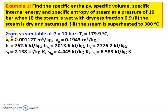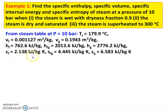We take the first case from the steam table at 10 bar and read all the properties from Table 2, saturated water table, from Steam Tables by R.S. Khurmi. Saturation temperature T = 179.9°C; VF = 0.001127 m³/kg; VG = 0.1943 m³/kg; HF = 762.6 kJ/kg; HFG = 2013.6 kJ/kg; HG = 2776.2 kJ/kg; SF = 2.138 kJ/kg·K; SFG = 4.445 kJ/kg·K; SG = 6.583 kJ/kg·K.